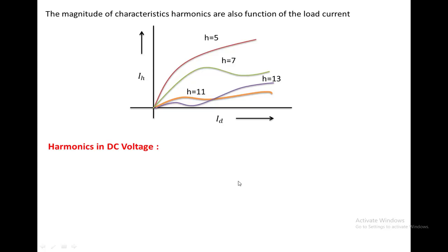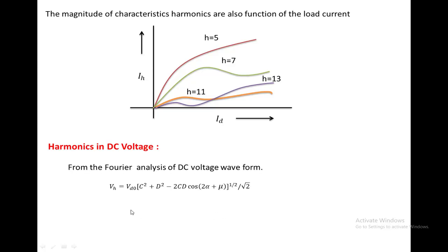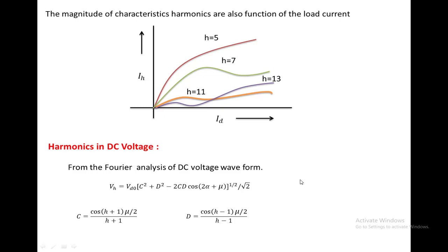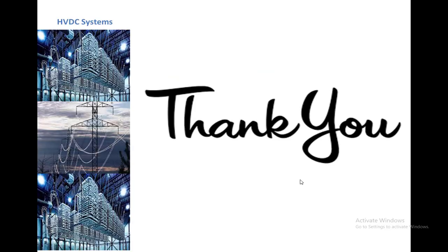For harmonics in DC voltage, the Fourier series for DC voltage in the DC link is: Vh = Vd0 · √(C² + D² − 2CD·cos(2α + μ)), divided by Vd0, where Vd0 is the DC link voltage with overlap angle zero. Here C = cos((H+1)μ/2) / (H+1) and D = cos((H−1)μ/2) / (H−1). This Fourier series is written for DC voltage because when converting AC to DC, a ripple is present in the DC voltage, which contains harmonic components. Thank you for watching this video.